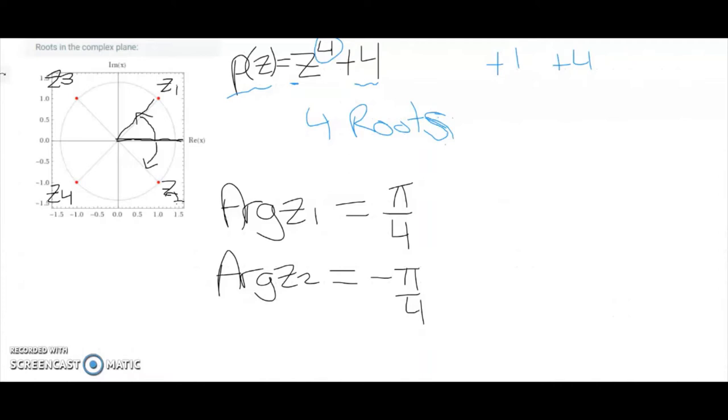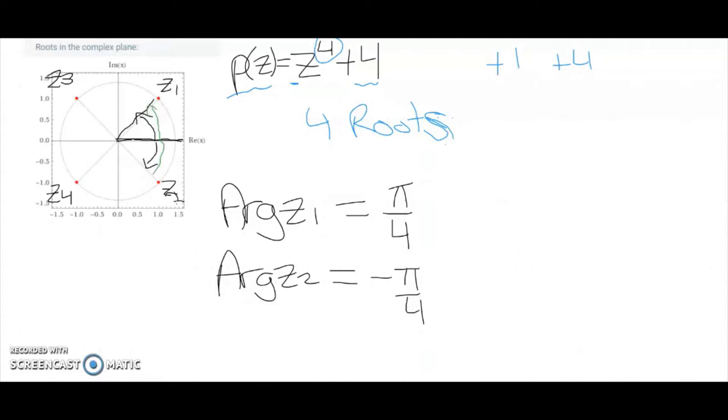If we want to look at the argument between two of our complex roots here, so let's say from z2 to z1, it's similar to what we did when we subtract two vectors. We simply look at the distance between them. So we can look at argument of z1, take argument of z2, which will be π on 4, take away negative π on 4, which is equal to π on 2.